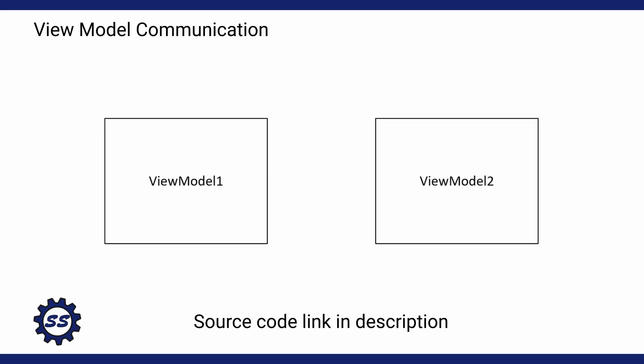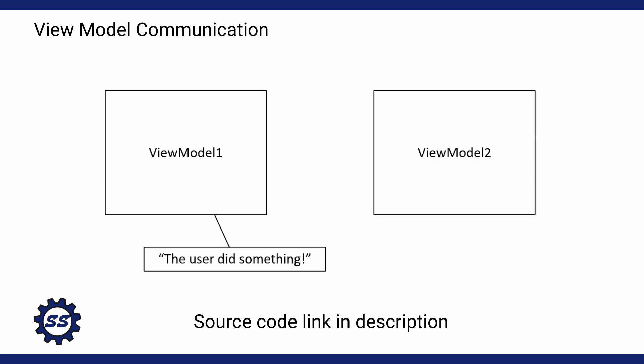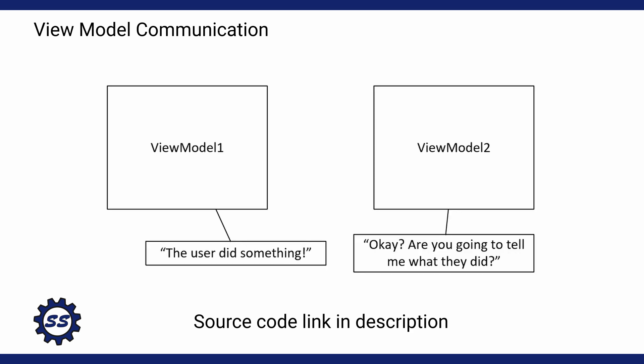Today I want to demonstrate how to communicate between view models. This is pretty common in a WPF application, or really any front-end application, when you have one part of the application that affects another part. This is also extremely important to understand for other advanced concepts in WPF and front-end applications, such as navigation and state management.